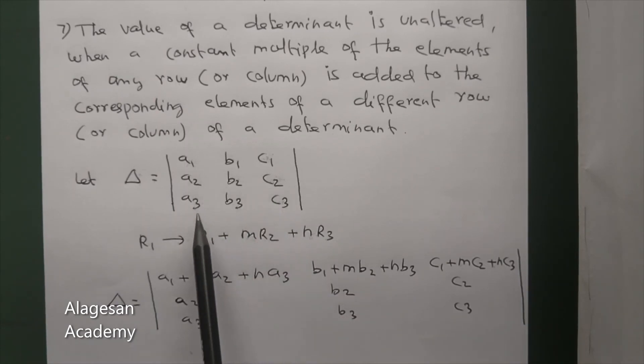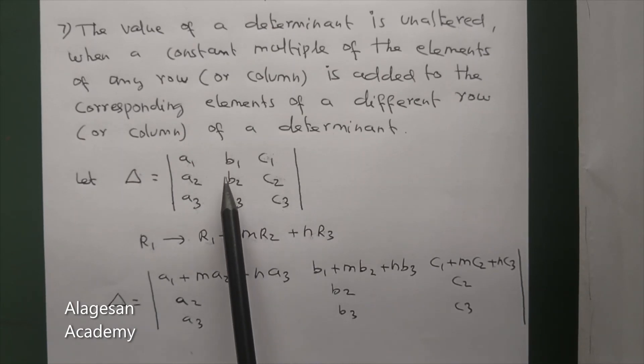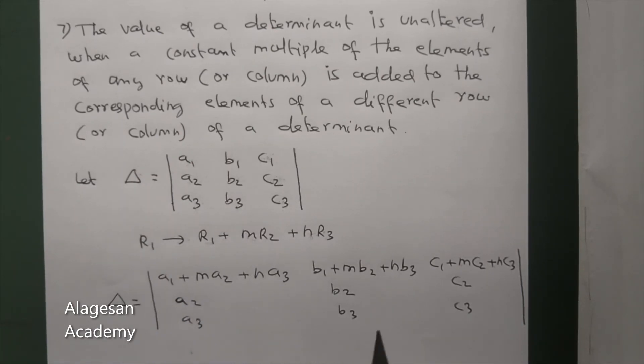R2 and R3 are multiplied by m and n respectively, and these elements are added to R1. So the value is still delta. This determinant's value is delta. That's all. Can you understand this property?